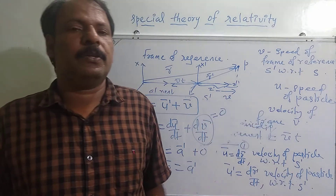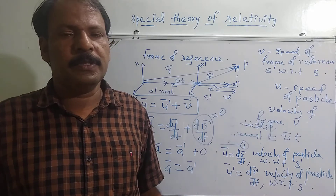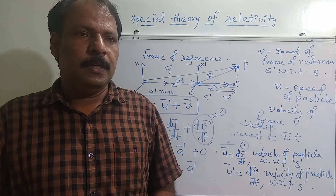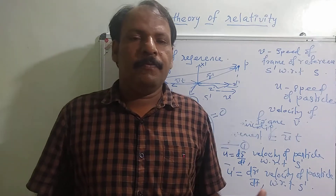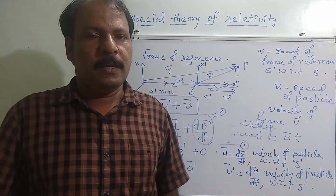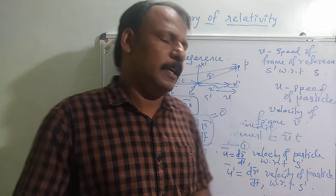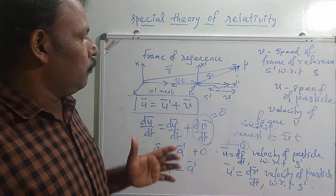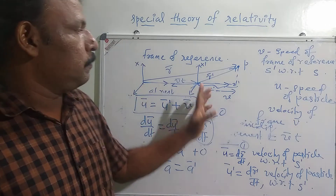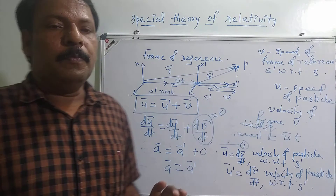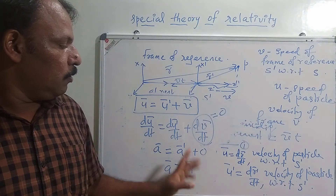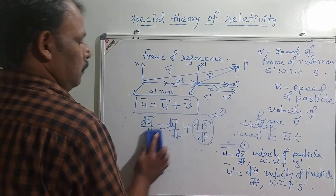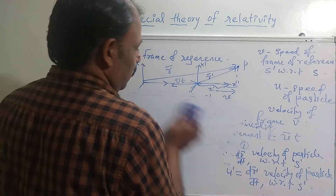This is the speciality of inertial frames. Since they are moving with uniform relative velocities, the acceleration will be the same when observed from all inertial frames. Since the acceleration is the same, naturally the force will also be the same. Whether you observe from S or S prime, the force acting on the particle will be the same since A equals A prime. These are the properties of inertial frames of reference.